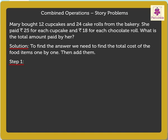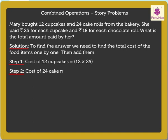Step 1: We know that the cost of one cupcake is 25 rupees. Therefore, the cost of 12 cupcakes is equal to 12 into 25. Step 2: It is given that the cost of one cake roll is 18 rupees. Therefore, the cost of 24 cake rolls is equal to 24 into 18.